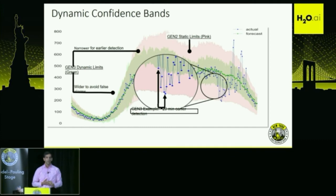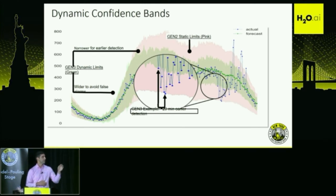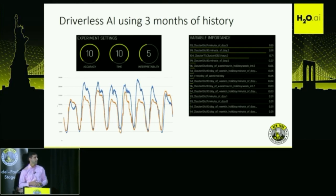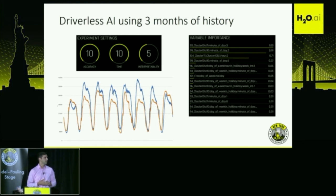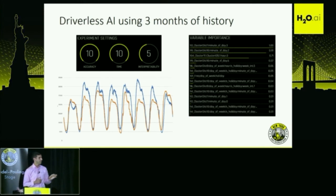This is everything we have in production now. From here, we wanted to see — having worked on this for about a year and a half — how Driverless AI would compare to everything we've been engineering. Using three months of history from January 2018 to March 2018, forecasting from April to May, I set accuracy and time both to 10 and let it run. In terms of variable importance, it picked up on minute of the day as one of the bigger features. The orange line is the forecast and the blue is the actuals. You can see it catches the shape pretty well, though it is still a little low.